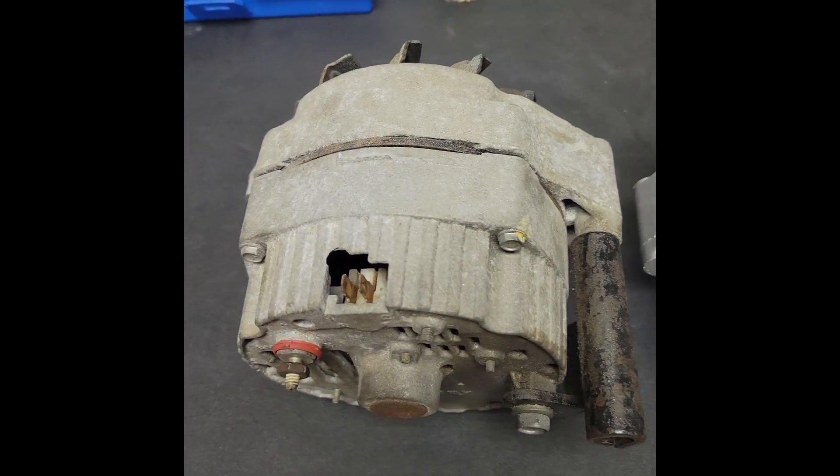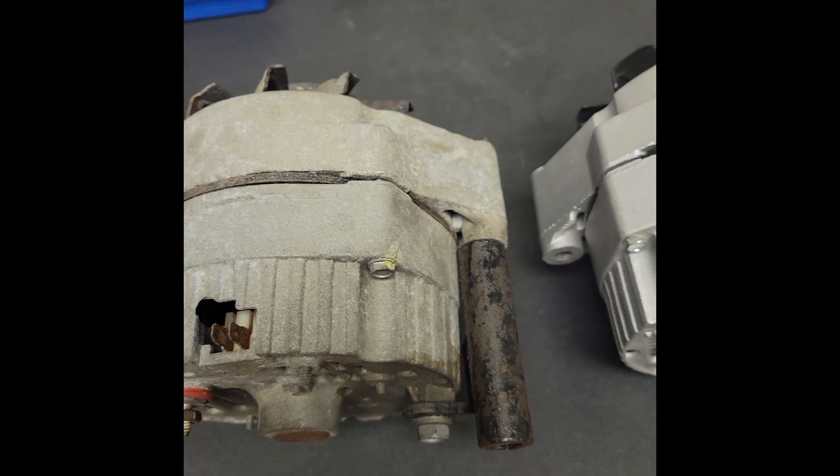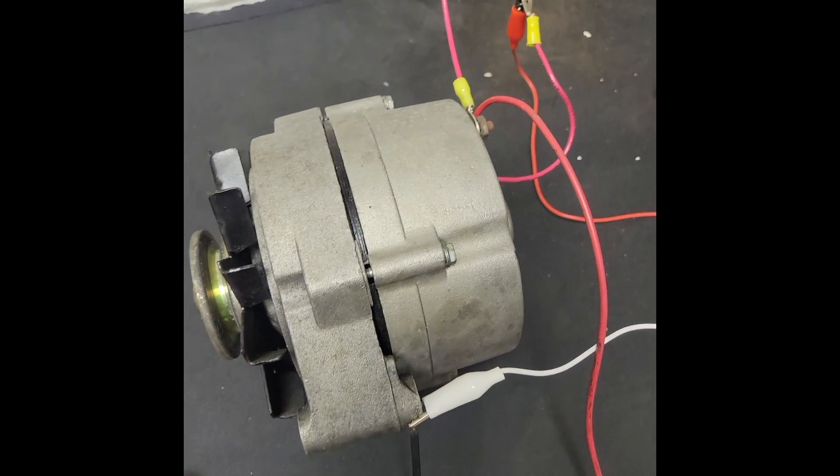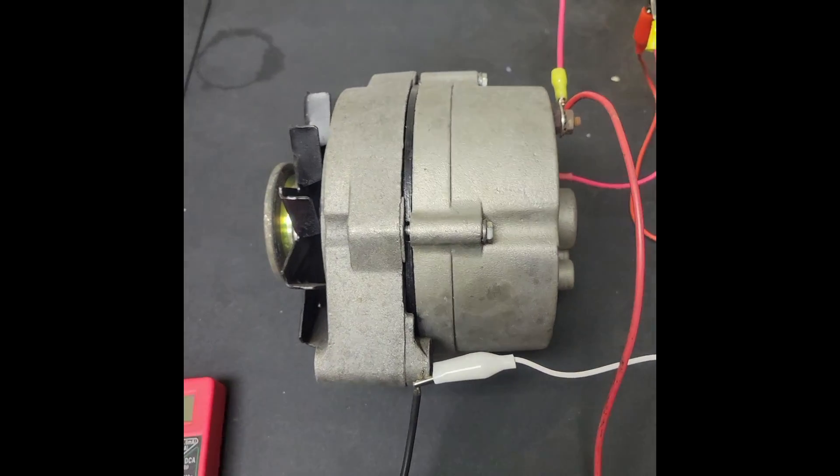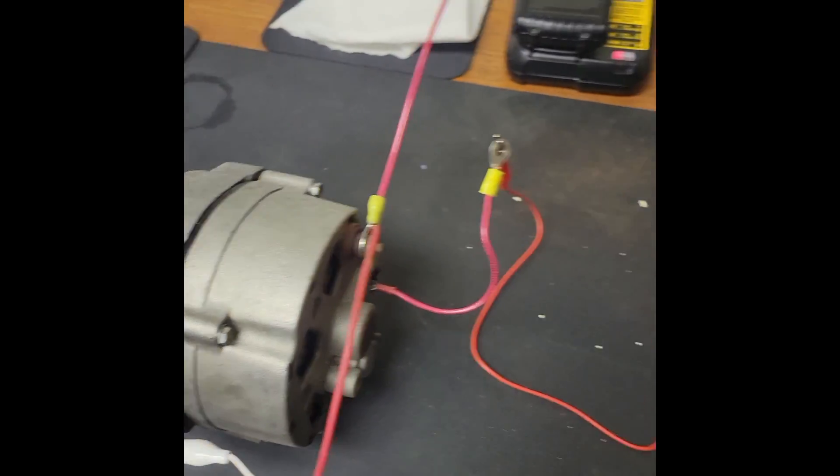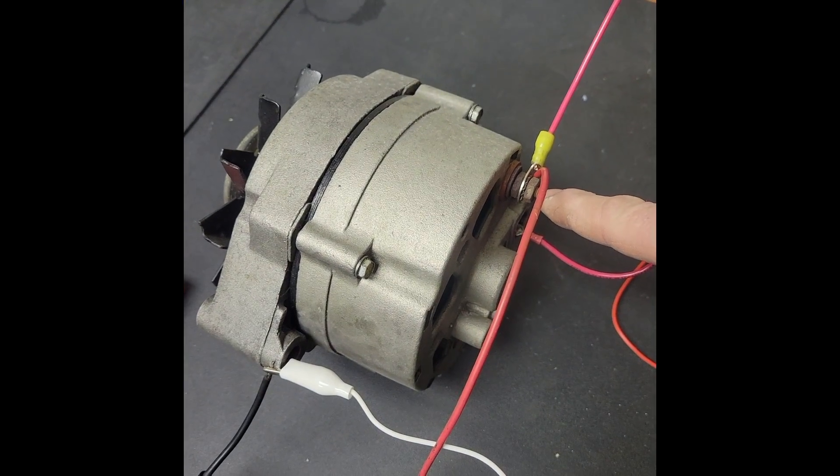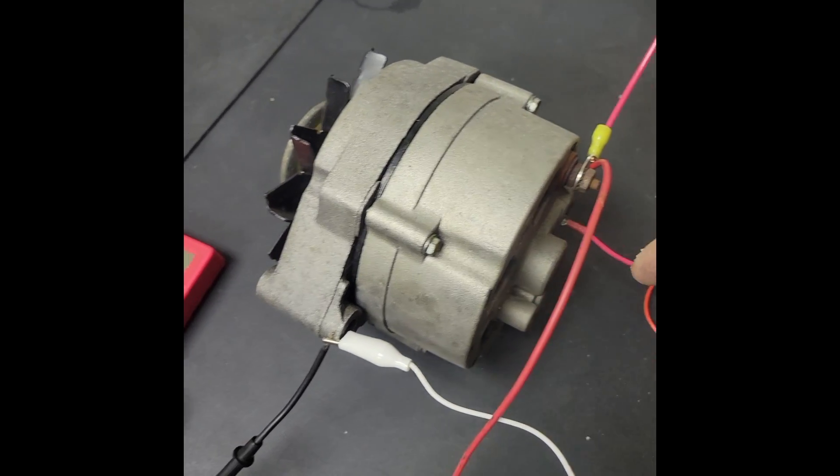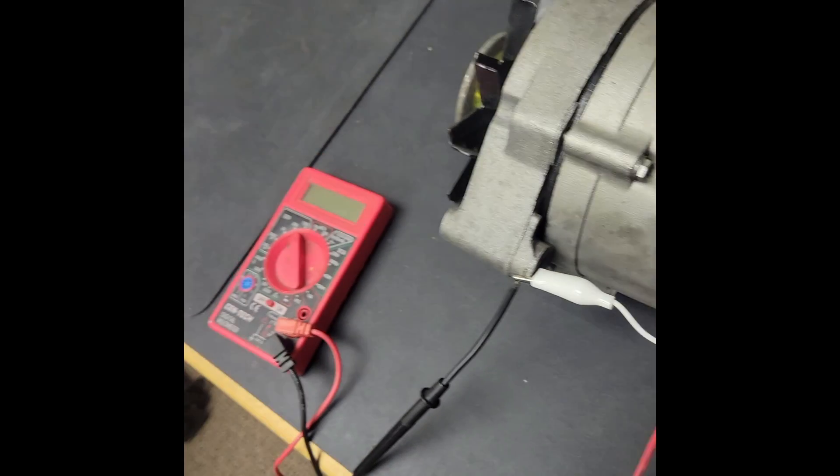This video will be bench testing an externally regulated alternator which we have hooked up right over here. We will be testing this without the voltage regulator hooked up. We have ground to our voltmeter going directly to our battery. We have our positive lead from the battery going to the output of the generator itself. Also connected to the output of the generator is the hot lead going to our voltmeter.